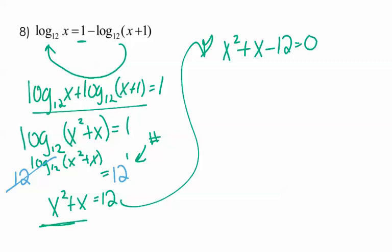So x squared plus x minus 12 equals 0 because we've got to get that set equal to 0. So now numbers that multiply by negative 12, add to be positive 1. Ding, ding, ding. The magic numbers are x plus 4 and x minus 3.